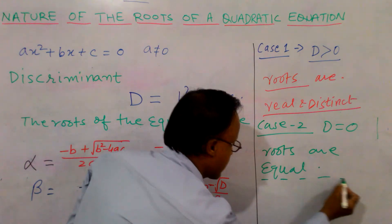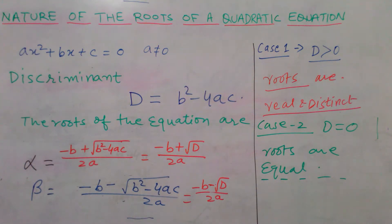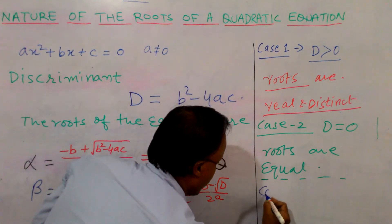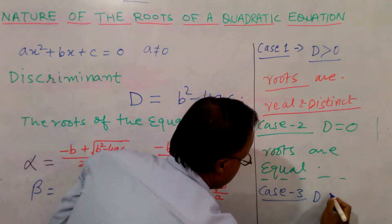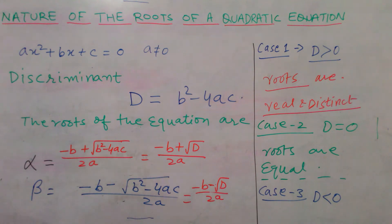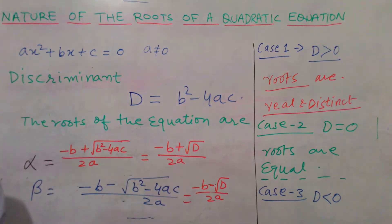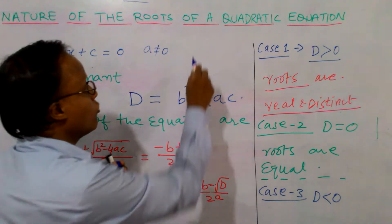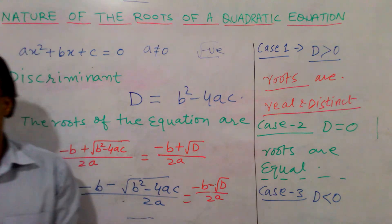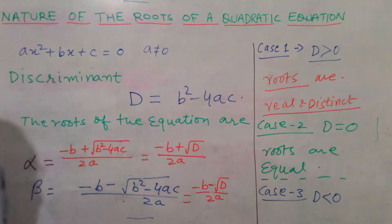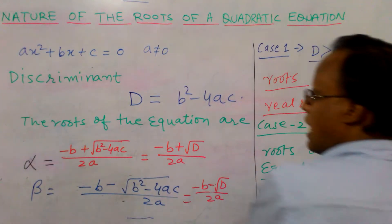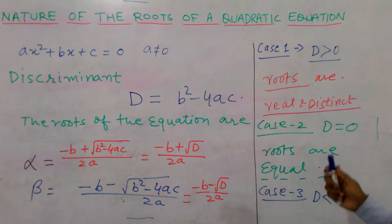Case 3: if D < 0. In the first case D > 0, in the second case D = 0, now we take D < 0. If D is less than 0, it means this value becomes negative. Less than 0 means negative, and the square root of a negative number is not possible. So it is an imaginary number. When D < 0, the roots are imaginary.